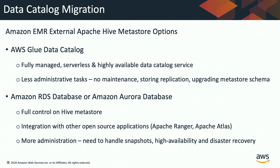The second option is Amazon RDS or Amazon Aurora to host your Hive Metastore — similar to what you may already do on-premise with an external database. This gives you full control of your Hive Metastore and lets you integrate with open-source applications like Apache Ranger or Apache Atlas. However, since you're responsible for maintaining the Metastore, this brings more administration work: you need to maintain replicas, handle snapshots, and come up with your DR/HA strategies.